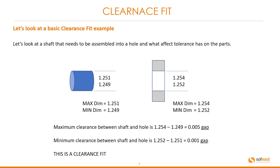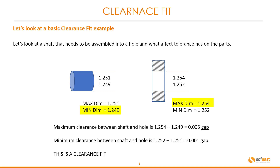Let's look at a basic clearance fit example. Here we have a shaft with a maximum dimension of 1.251 and a minimum dimension of 1.249, whereas the hole has a maximum dimension of 1.254 and a minimum dimension of 1.252. The maximum clearance is 1.254 minus 1.249, giving us a gap of 0.005 of an inch. The minimum clearance is 1.252 minus 1.251, meaning we have a gap of 0.001. This is a clearance fit.